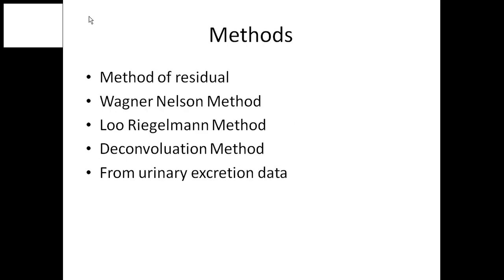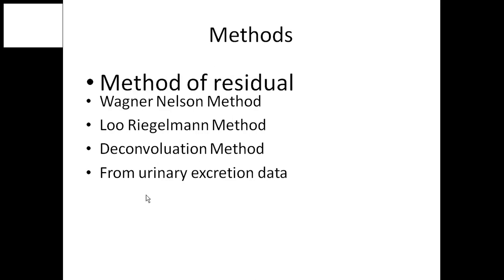There are various methods for the Determination of Absorption Rate Constant or KA — the Method of Residual, Wagner-Nelson Method, Lue-Regelman Method, Deconvolution Method, and Determination of KA from urinary excretion data. As far as today's discussion is concerned, we will be discussing the Method of Residual.